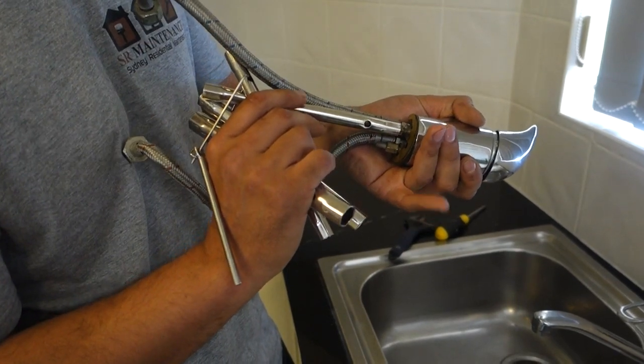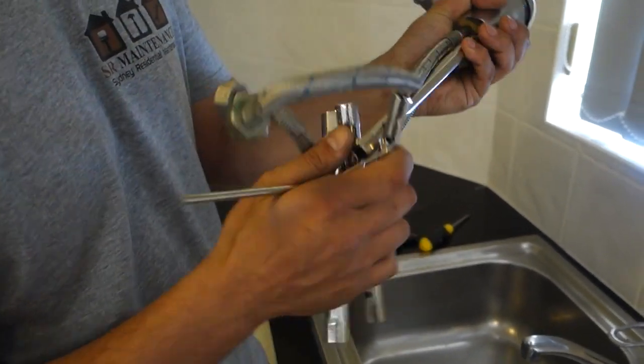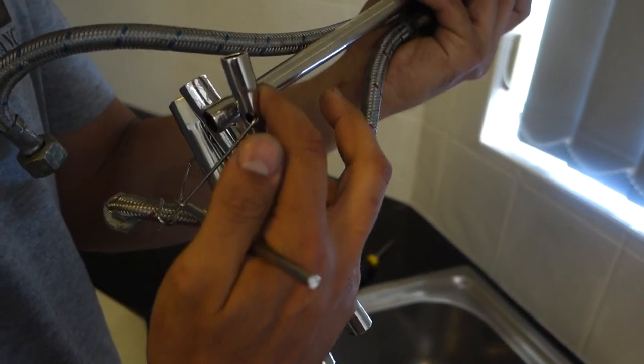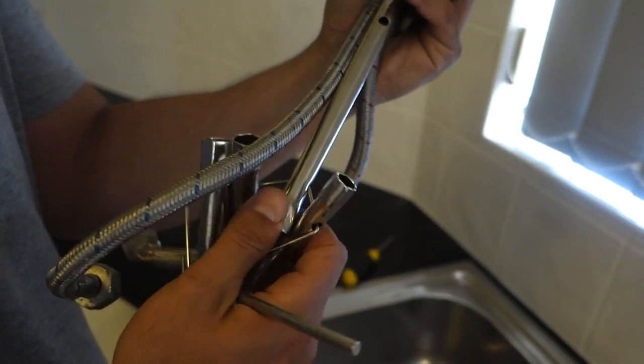Very easy. They simply slot right over the top and then you can turn it from the bottom using your adjustable wrench. Or we've got a little tool here that we can slot in the little hole down the bottom and turn that over manually.